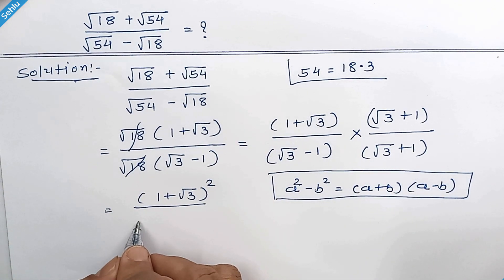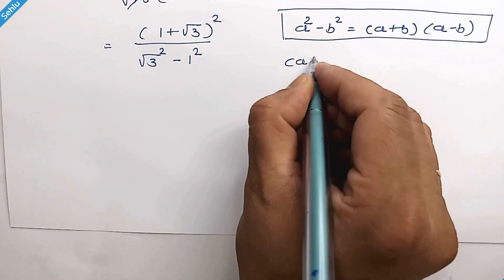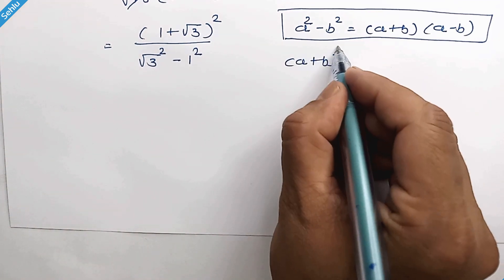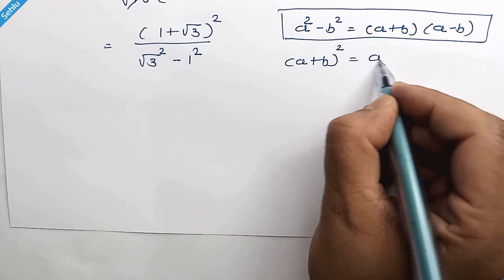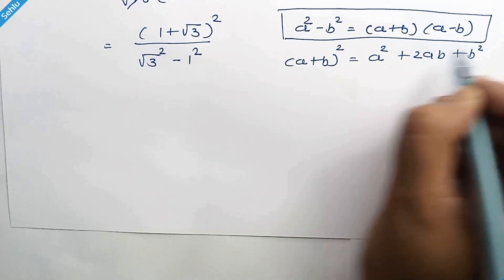So here we can write square root of 3 squared minus 1 squared. And here we can apply an identity which is a plus b whole squared, which equals a squared plus 2ab plus b squared.